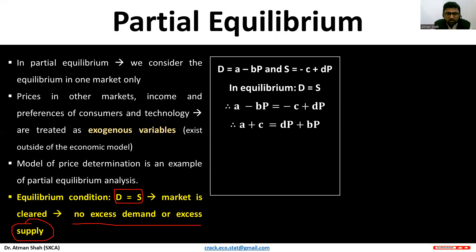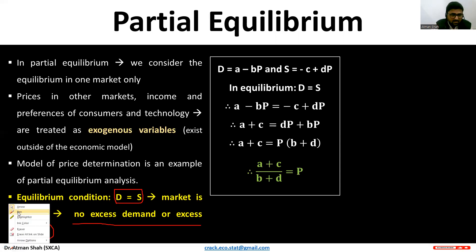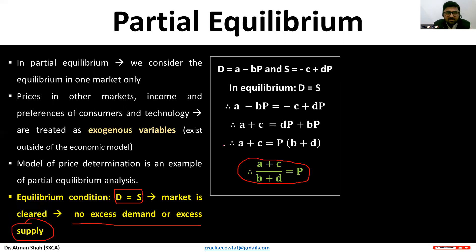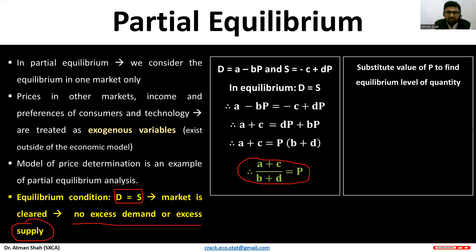Rearranging: a plus c equals dp plus bp. Taking p as a common factor gives a plus c equals p times (b plus d). Therefore, the equilibrium price is p* = (a + c) / (b + d). When we substitute this value into either the demand or supply equation, we will get the equilibrium level of quantity.